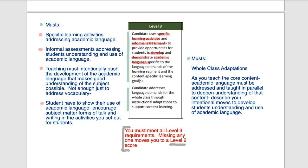In the second block, the candidate addresses language demands for the whole class through instructional adaptations to support content learning. The requirement here is whole class adaptations. You want to make sure that your attention to academic language through your learning activities and assessments fits who you're teaching and considers all the different kids in your classroom. As you teach the core content, academic language must be addressed and taught in parallel to deepen understanding of that content. It should be clear in your writing and planning that you're using academic language to deepen students' learning of the content.